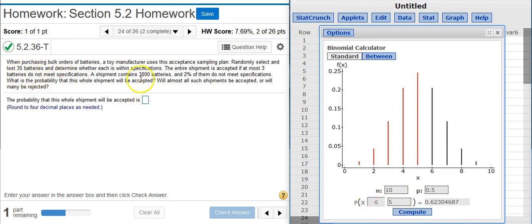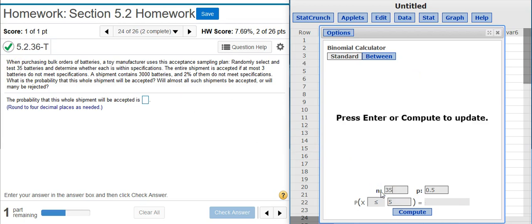Why am I using the 35 and not the 3,000? Well, because 3,000 is the population. 3,000 is the entire shipment. We're just taking a portion of that population. That's what a sample is, a portion of the population. So, the 35 batteries is our sample size and not the 3,000.